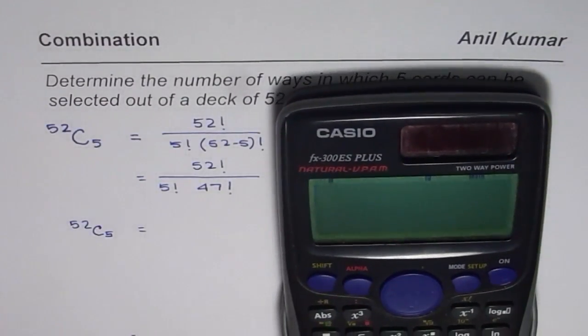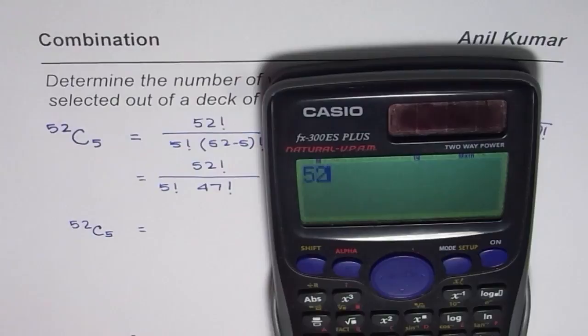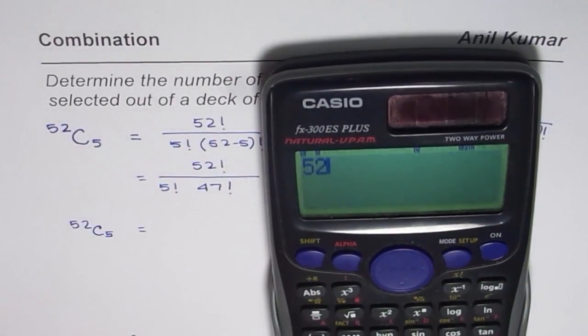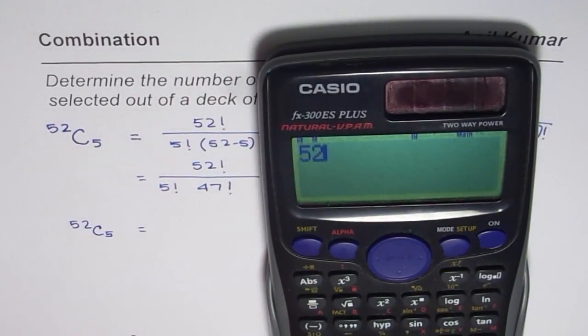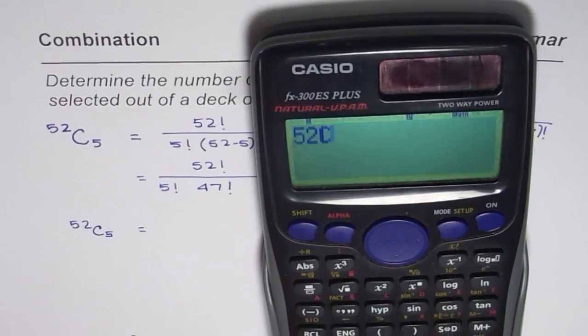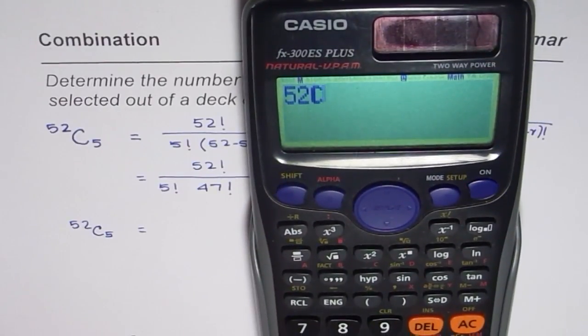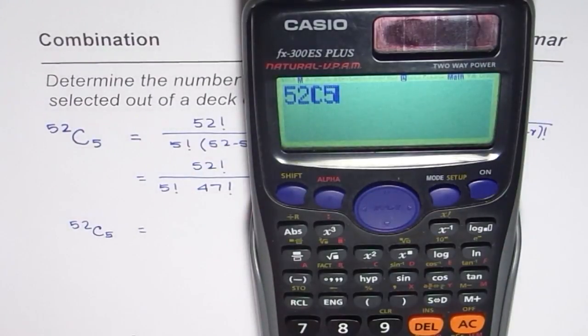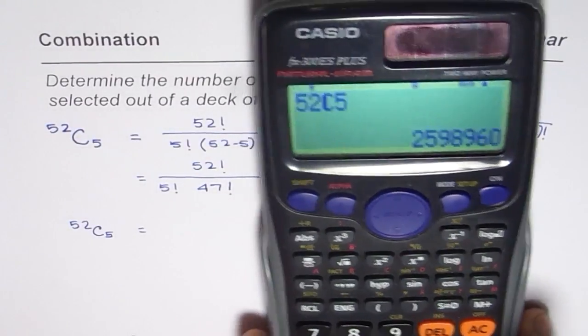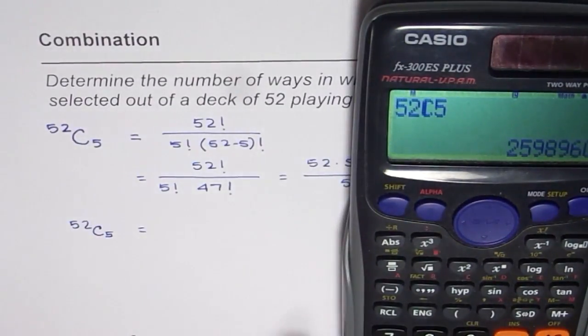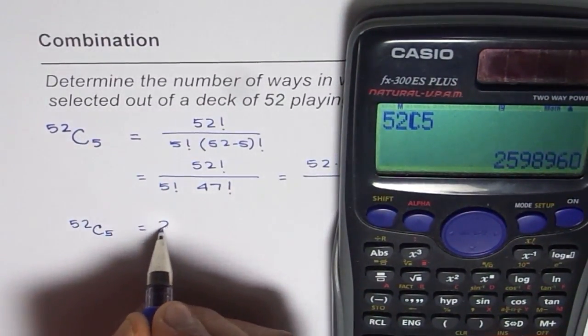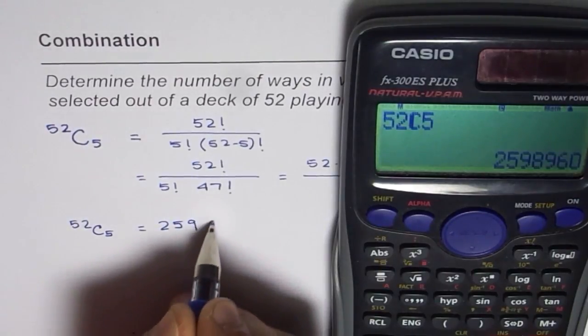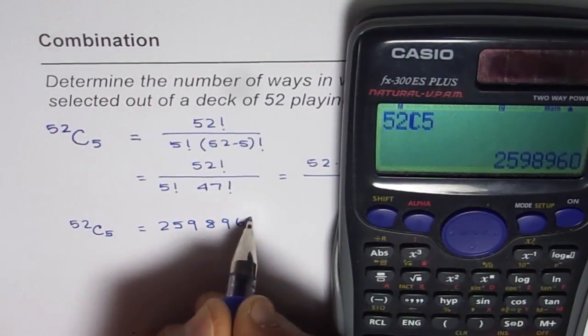So what we have here is we have 52 and then we have a function key for NCR. So that is NCR for us. I hope you can see this. So that is NCR. And now we want to find 5. So 52C5 is equal to we get our result as 2598960.